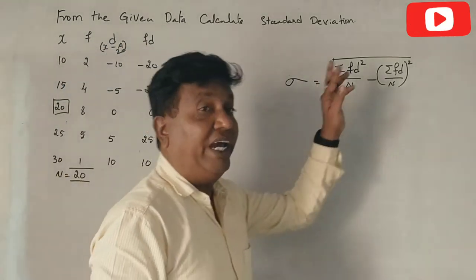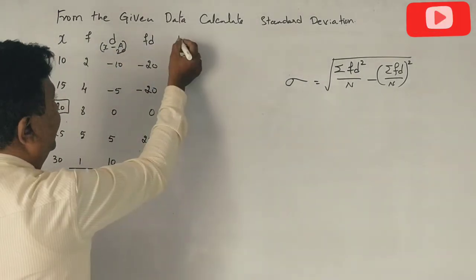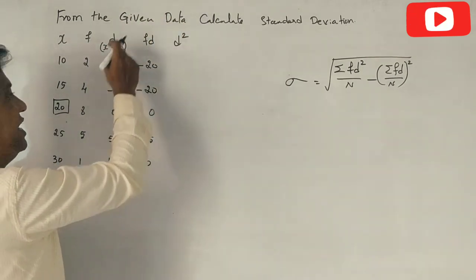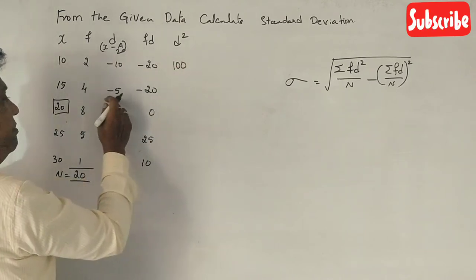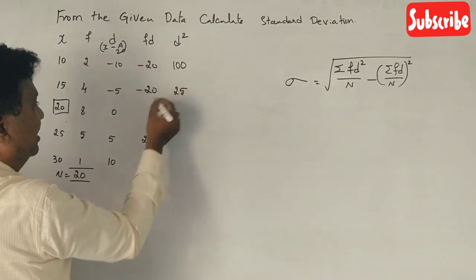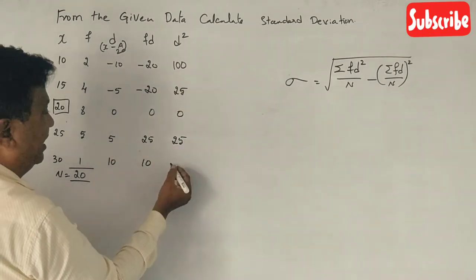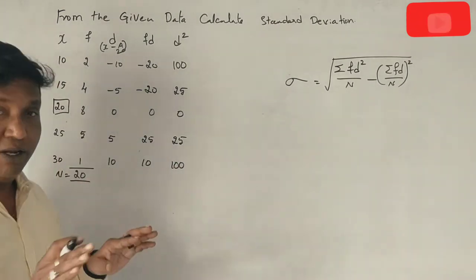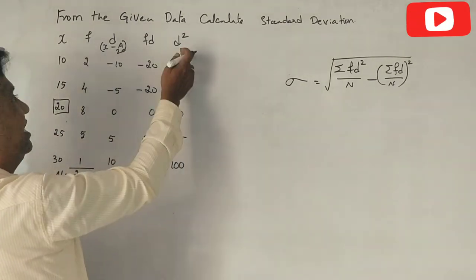Now, d squared equals d into d. That means: minus 10 into minus 10 — minus into minus is plus — equals 100. Minus 5 into minus 5 equals 25. 0 into 0 equals 0. 5 into 5 is 25. 10 into 10 is 100. So d squared totals are calculated.